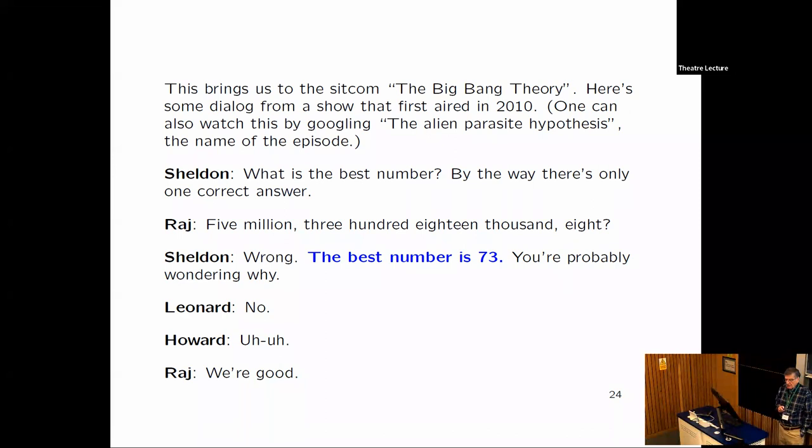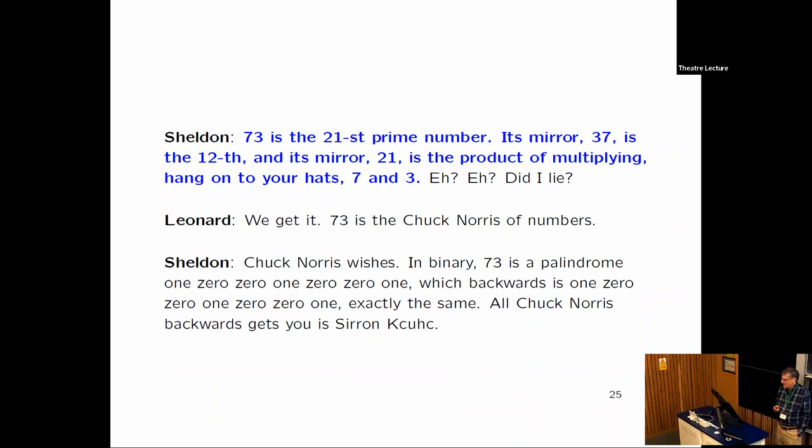You're probably wondering why. The other character says, oh we're good. And Sheldon says, 73 is the 21st prime number. Its mirror, 37, is the 12th prime number. And its mirror, 21, is the product of multiplying two digits, 7 and 3.